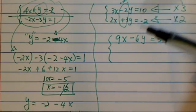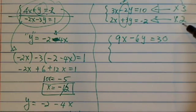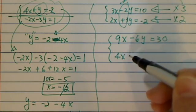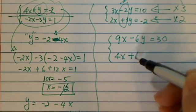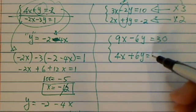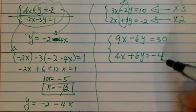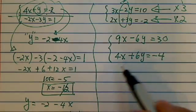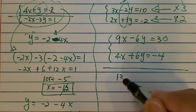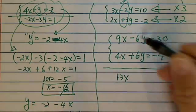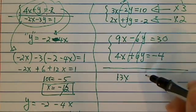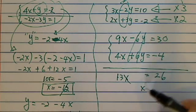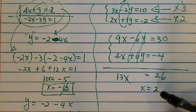This one I'm going to multiply by 2, so I have 4x plus 6y is equal to minus 4. I'm going to add those two: I have 13x — the y terms cancel out — equal to 26. So x is equal to 2.